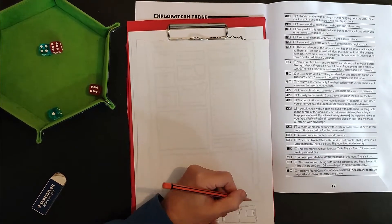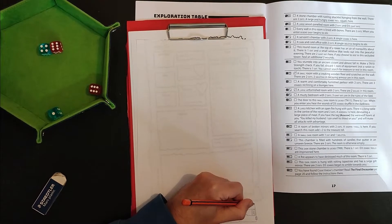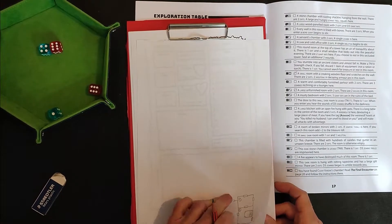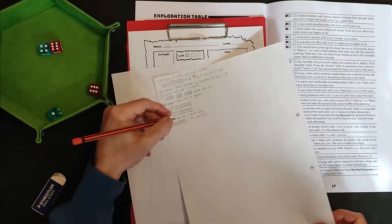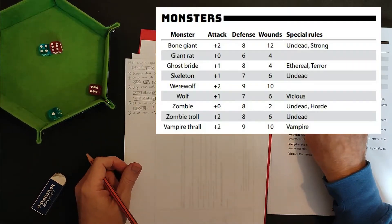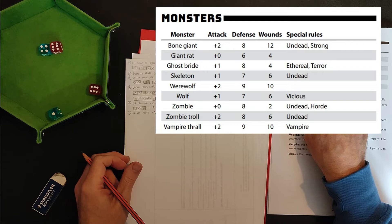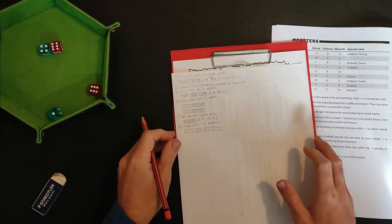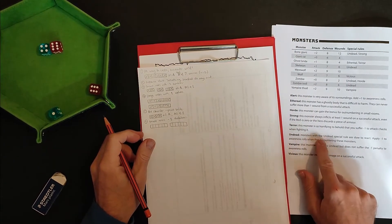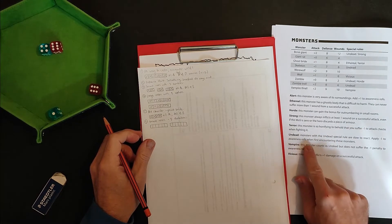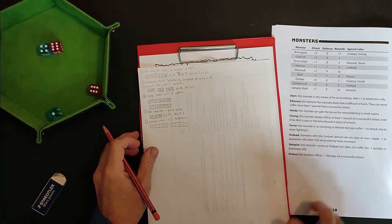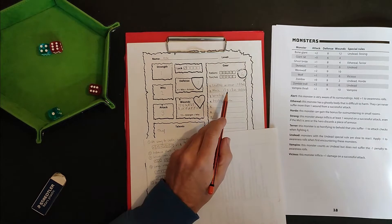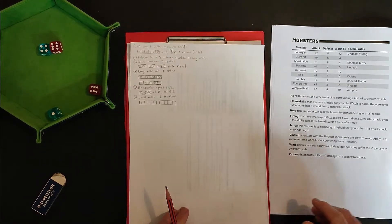Two skeletons, two exits. You get a lot of, you're never going to run out of doors to go through in this game. I'll say that much. So look, we got plus one attack, defense of seven and six wounds. Okay. So they're pretty beefy. And they are undead. Monsters with the undead special rule are slow to react, minus one to awareness rules when first encountering these monsters. But then that is it. That is the only weird thing about them. Because I've got a mace, I do get plus one versus skeletons, which is pretty sweet.